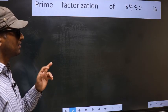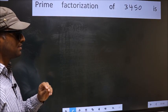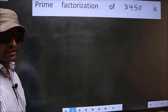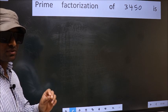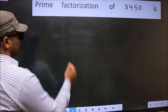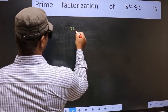Prime Factorization of 3450. To do Prime Factorization, first we should frame it in this way. 3450.